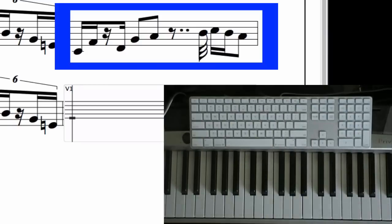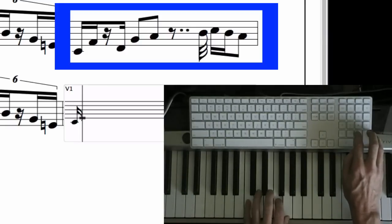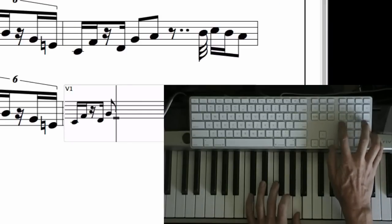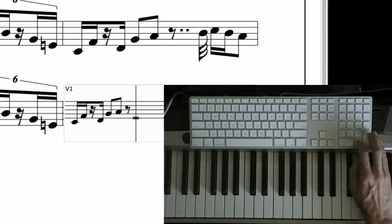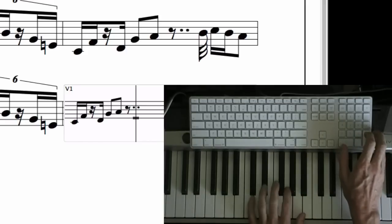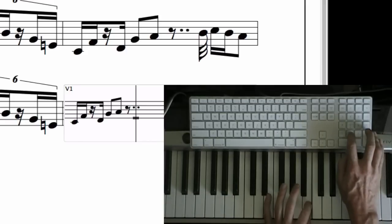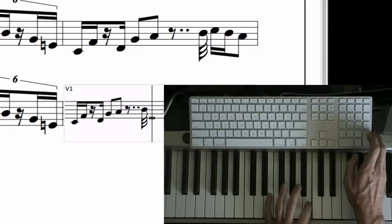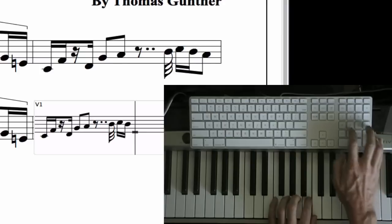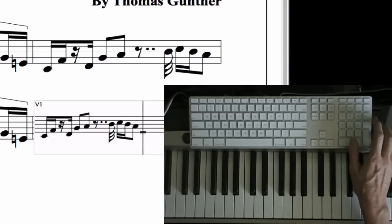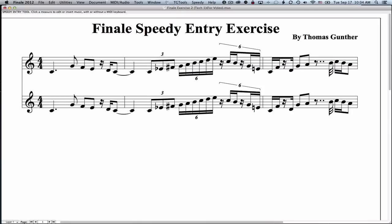Move to the next bar. Put this in. Eighth note, double dotted, period, period. And then I play the B, press 2 for a thirty-second note. And I get out of the speedy entry tool by pressing zero. And that's it.